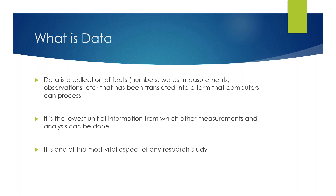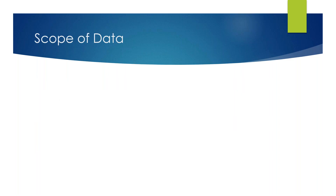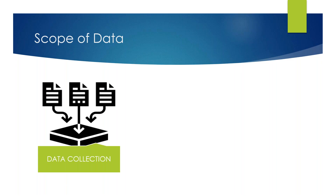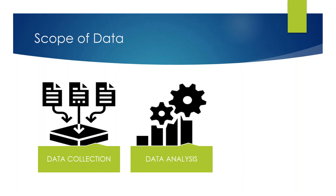Data is one of the most vital aspects of any research study today. By 'scope,' what I mean is what you can do with the data available. There are three main scopes. The first is data collection — you need to have the data in one place in a structured format so that both humans and computers can understand and perform analysis on it.